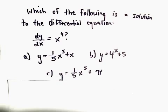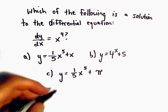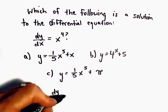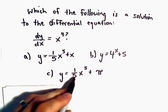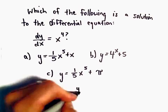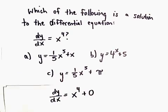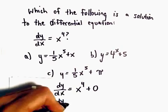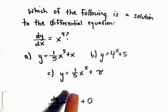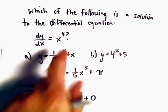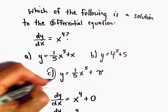And likewise, we can check part c. The derivative of y with respect to x: we'll get 1/5 times 5x to the fourth, which gives us x to the fourth. The derivative of pi is just zero. So we've found our solution — part c is the solution to this differential equation.